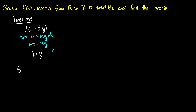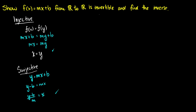Next we show surjectivity. We set y = mx + b and solve for x. We get y − b = mx, so x = (y − b)/m. If we pick any value for y, we get a corresponding x back, so it is surjective — every y gives a unique x.